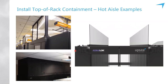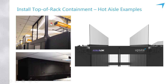Hot aisle containment means building a vertical perimeter around the hot aisle from the tops of the racks to the ceiling. Hot aisle containment is most often used in scenarios where you have an overhead return plenum above a drop ceiling — as seen in the photo at the top left. There will be perforated or registered tiles in the ceiling instead of solid tiles. The hot air fills the hot aisle, rises, and is drawn back to the intake of the perimeter air conditioning units.